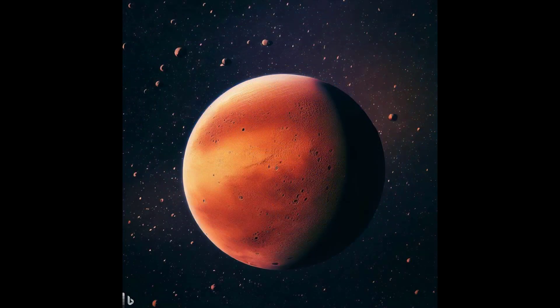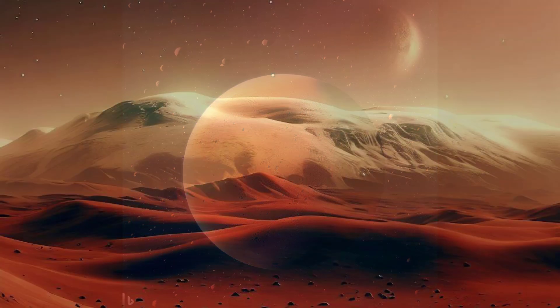Mars is the fourth planet from the Sun and the second smallest planet in our solar system. It has a reddish appearance due to iron oxide in its soil. It has two small moons named Phobos and Deimos. It has a thin atmosphere that allows water to exist as ice at its poles.